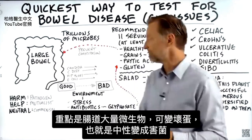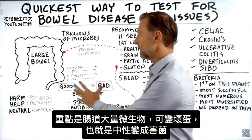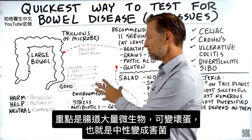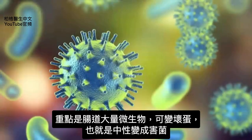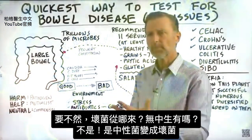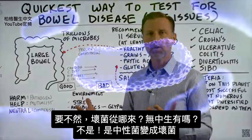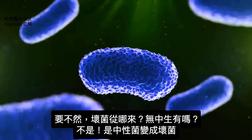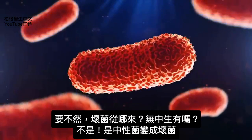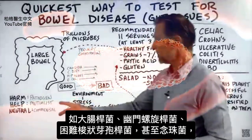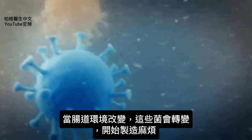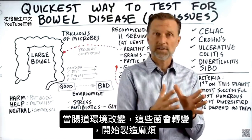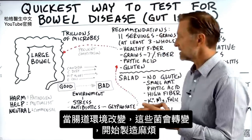Here's what you need to know: a good amount of the microbes in your gut can actually change and morph into the bad guys. A microbe that is neutral can turn pathogenic. Where do these bad microbes come from? They're actually coming from a shift — from being neutral to now being pathogenic or harmful. That definitely applies to E. coli, H. pylori, C. diff, and even candida. When the environment of your gut changes, these microbes shift their condition and can start creating trouble for you.